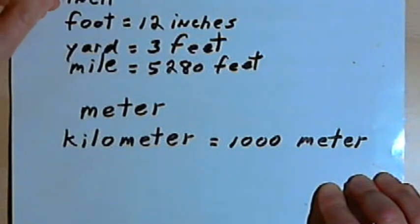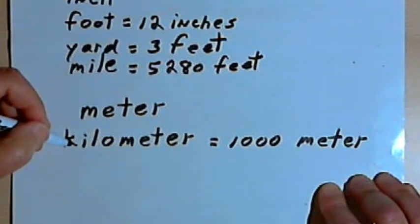A kilometer is about three-fifths of a mile. If you have a five-kilometer race, that would be a three-mile race, approximately.